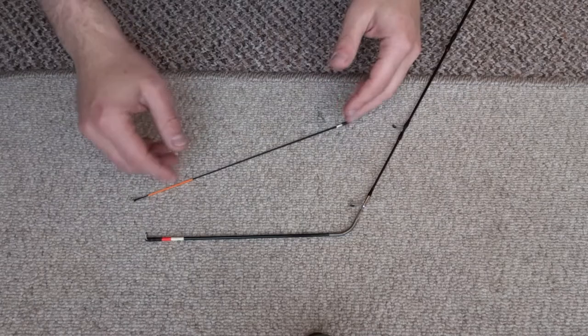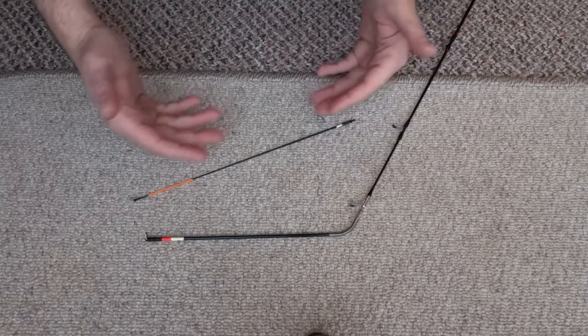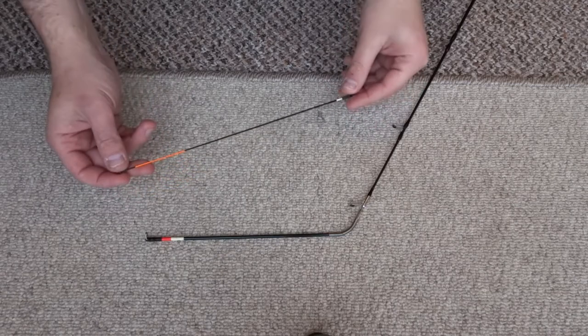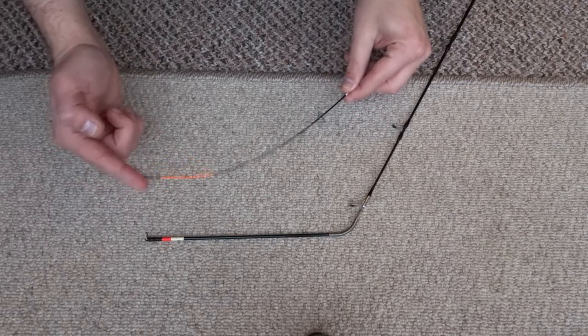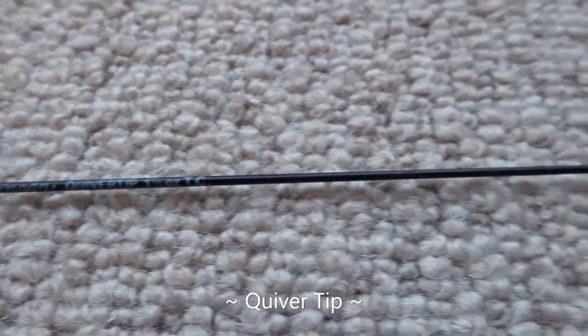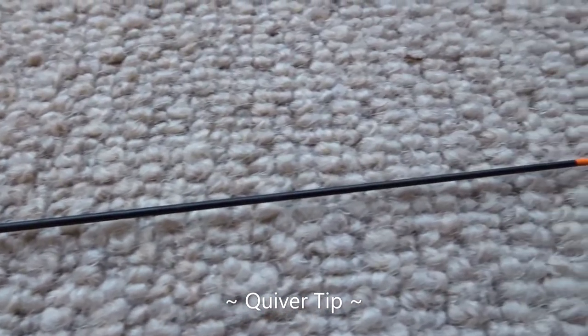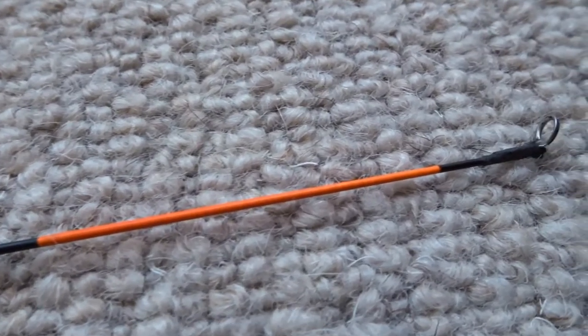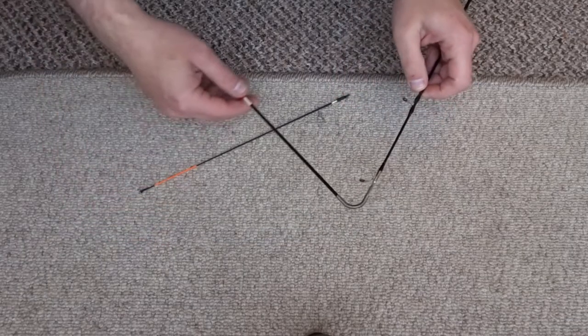So first of all, what are they for? Well they're for ledger fishing and picking up sensitivity, picking up bites. So the quiver tip quivers and the swing tip swings.